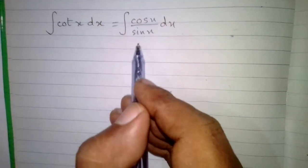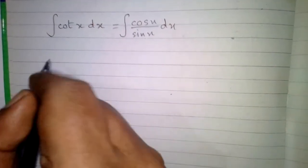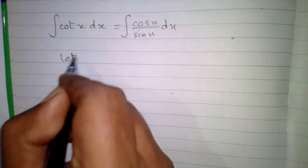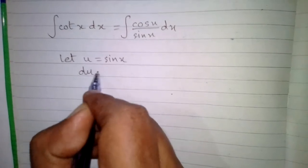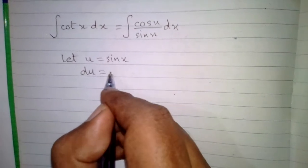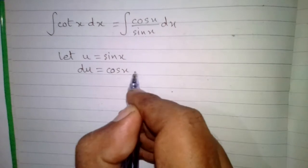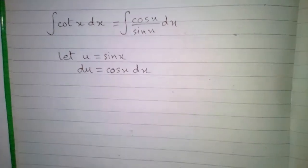Now we can let sine x as u, so let u is equal to sine x. The differential du is equal to the derivative of sine x which is equal to cos x multiplied by dx.